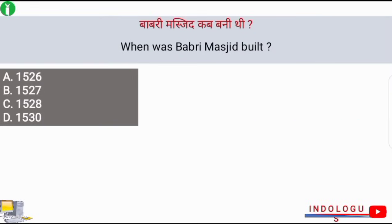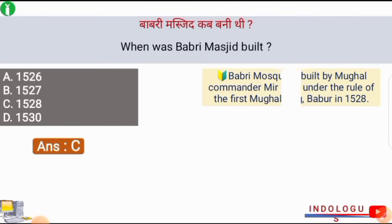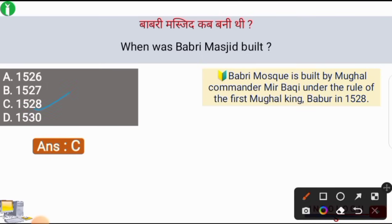When was Babri Masjid built? The correct answer is option number C — in 1528, the Babri Masjid was built by Mughal commander Mirbaqi under the rule of the first Mughal king, Babar. The commander was Mirbaqi, who had constructed the Babri Masjid. We have to keep this in mind.